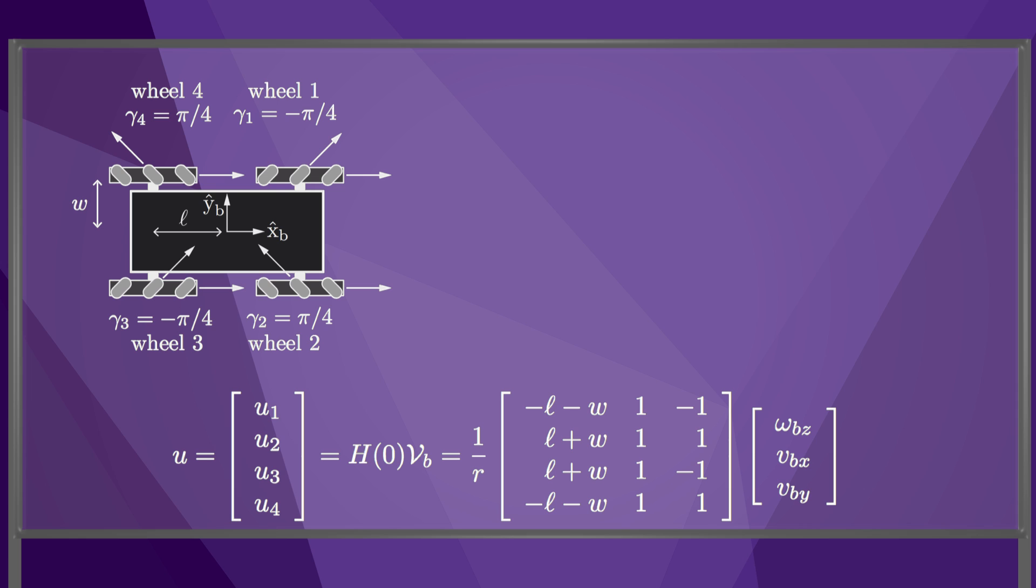The fact that this matrix is not square means that an arbitrary choice of wheel speeds will cause skidding of the wheels in the drive direction. To avoid skidding, the wheel speeds must be chosen on a three-dimensional surface in the four-dimensional wheel speed space, as determined by the H matrix. This is unlike the three-omni wheel robot, where we can choose the wheel speeds arbitrarily without causing skidding.